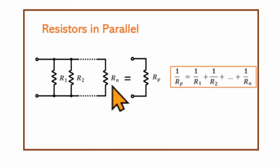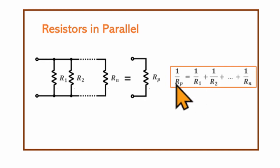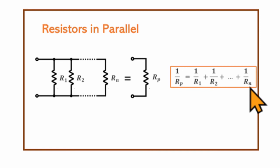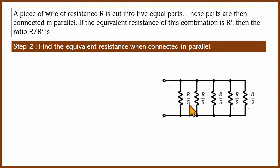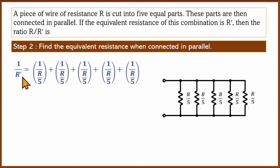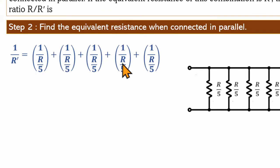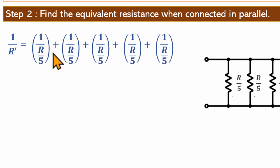For the parallel combination of n parts, we use the formula: 1/R_p = 1/r1 + 1/r2 + ... + 1/rn. In this case, r1, r2, r3, r4, and r5 are all equal to R/5. Substituting, the equivalent resistance R' satisfies: 1/R' equals 1/(R/5) + 1/(R/5) + 1/(R/5) + 1/(R/5) + 1/(R/5).